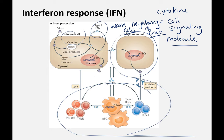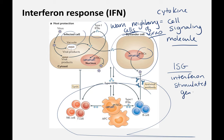Interferons can also stimulate the immune system and sometimes signal 'come and kill me, I've been infected.' What's interesting about interferon cell signaling are ISGs — interferon-stimulated genes. These are genes produced by the host cell, and the whole point is to combat a viral infection and get it under control. There are hundreds of interferon-stimulated genes that have antiviral effects.